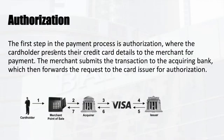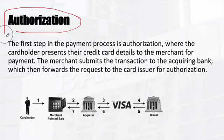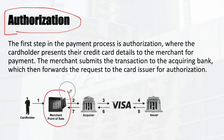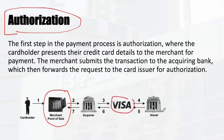The first step when you swipe your card or make a purchase at an online retail store is authorization — whether you are eligible to make the purchase. The cardholder swipes a card or makes a payment on an e-commerce site, the information is sent to the acquirer, from there it goes via the IPS to the issuer, and the issuer will approve or deny the request based on multiple conditions.